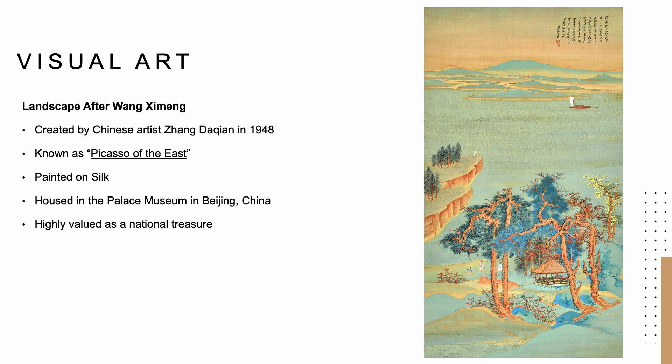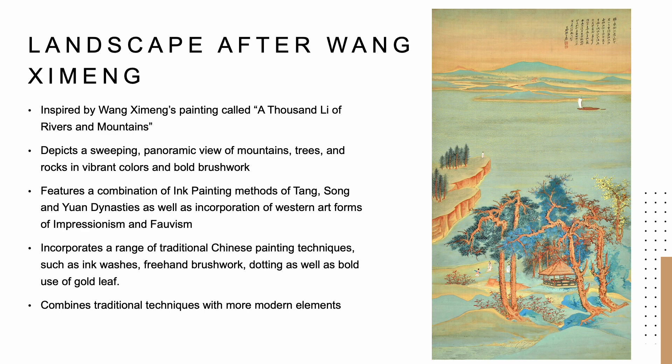I'd like to talk about a painting that I find particularly fascinating. It's called Landscape after Wang Ximeng and was painted by Zhang Dachian, also known as the Picasso of the East, back in 1948. Zhang was renowned for his incredibly detailed paintings, and this one is no exception. What's interesting about this piece is that it was painted on silk and is currently housed in the Palace Museum in Beijing, where it's considered a national treasure for the Chinese people.